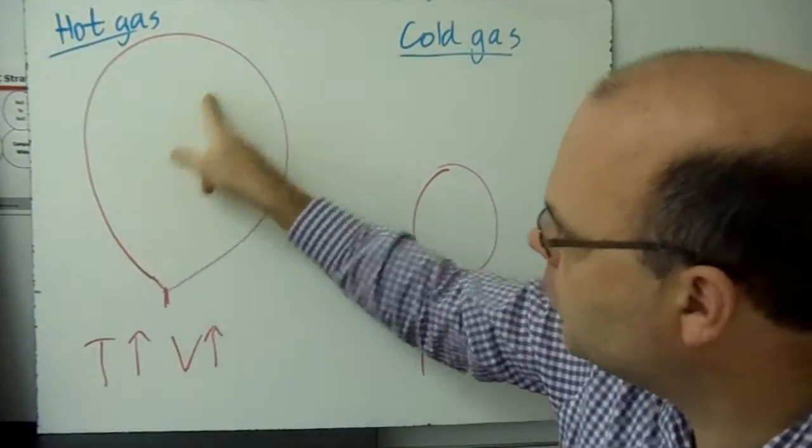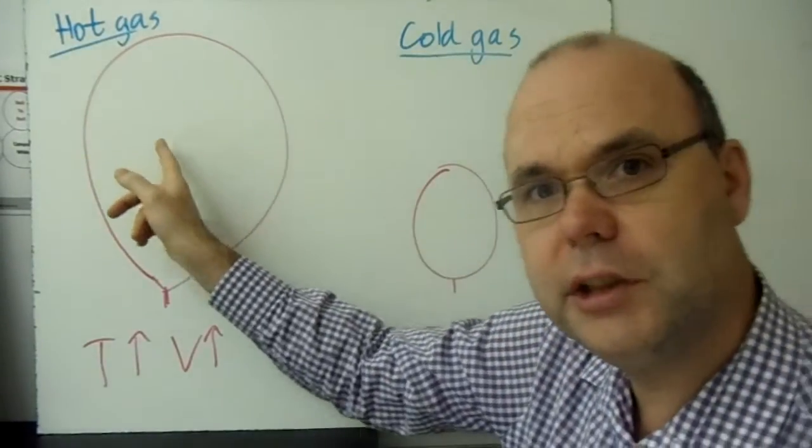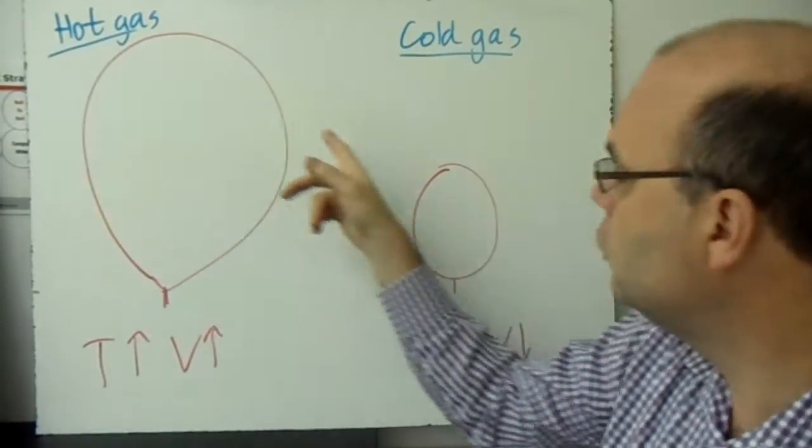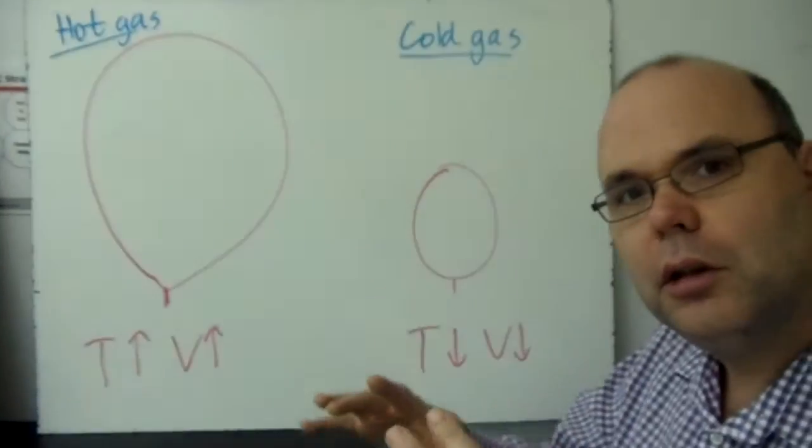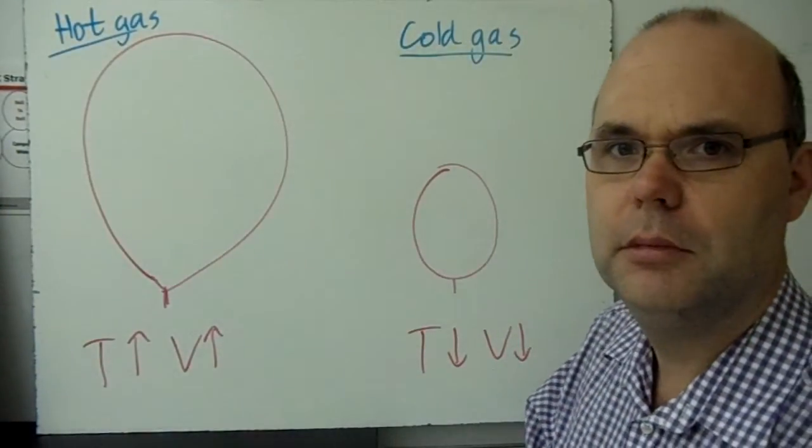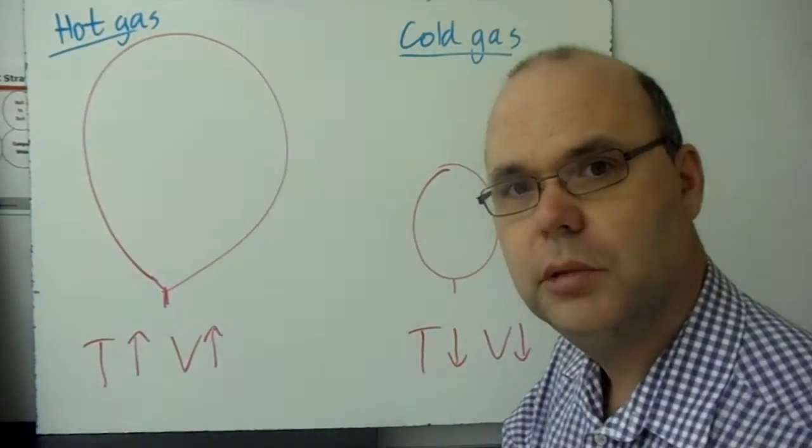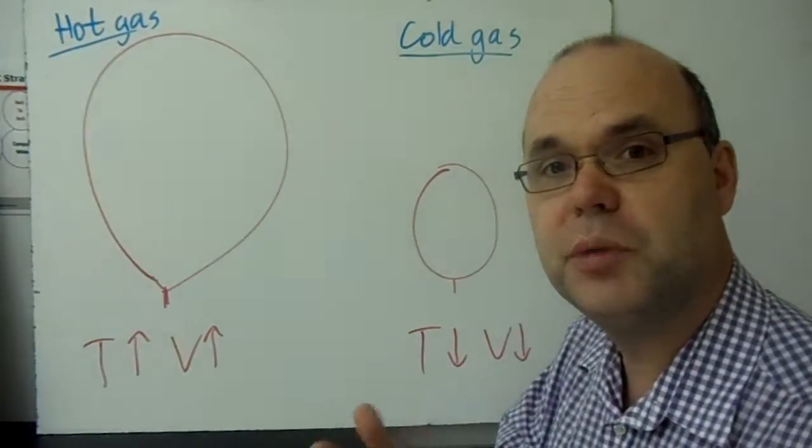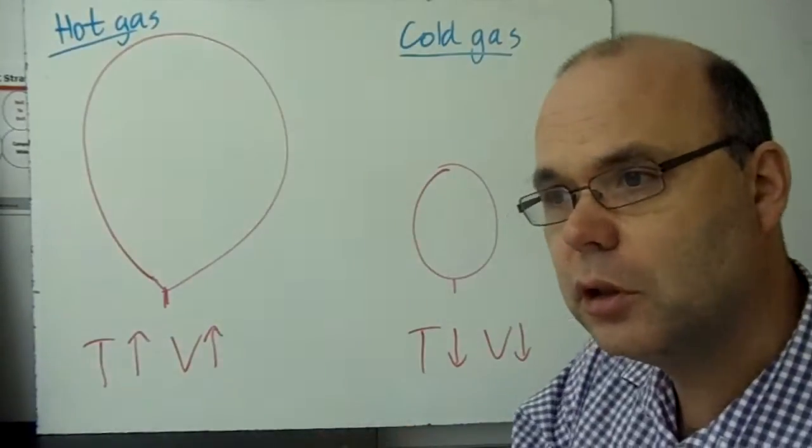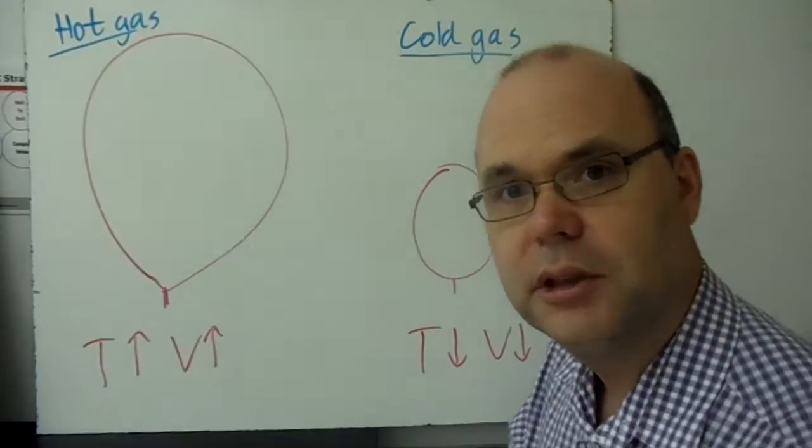Why does it get smaller? Because in here, the gas particles are whizzing around like crazy because they're hot. When you cool them down, they slow down, they take their time. They don't bump into the sides as much as they used to. They don't take up as much space because they're moving more slowly and kind of taking their time.